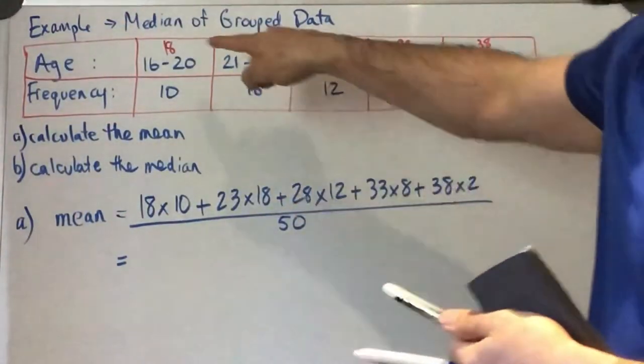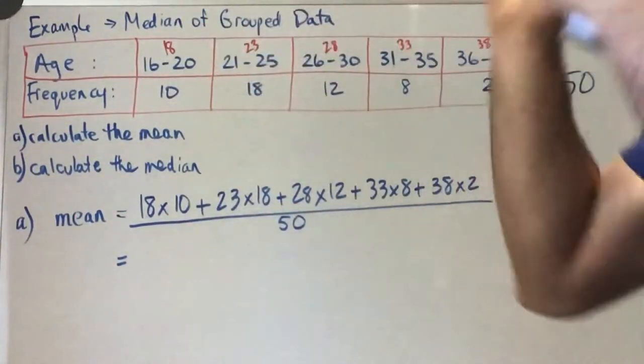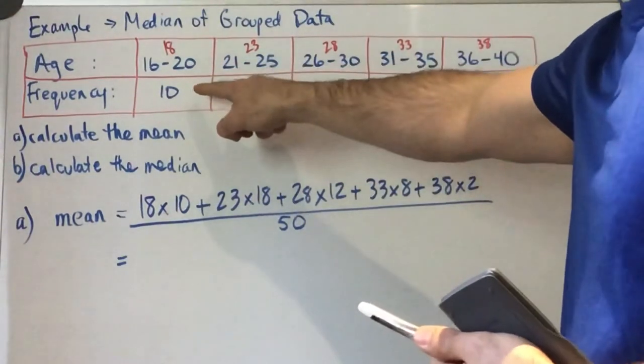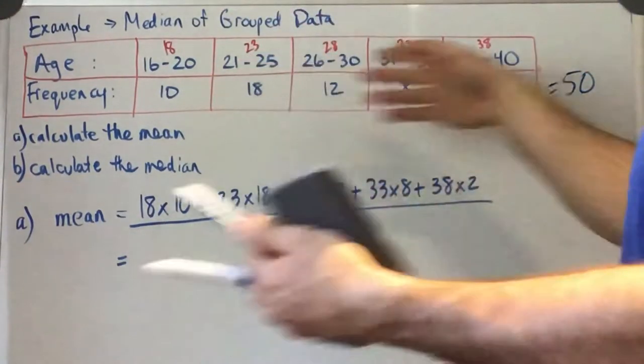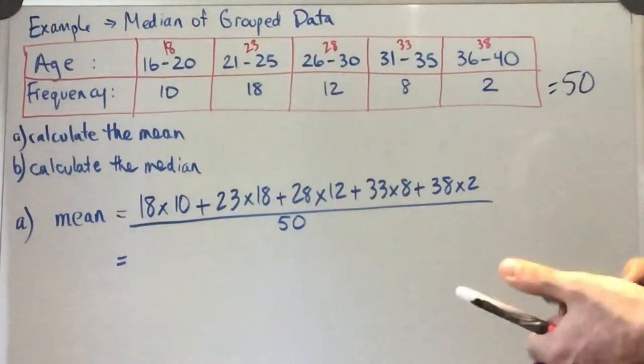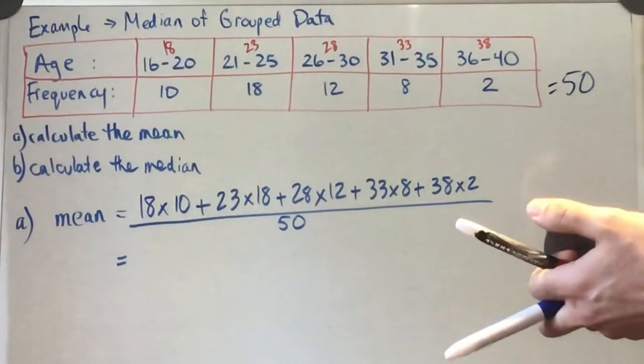Okay, so we're going to take our midpoint of the interval, multiply it by the frequency, add it to the next one, so on and so forth, to get a total here. So this might take a second.